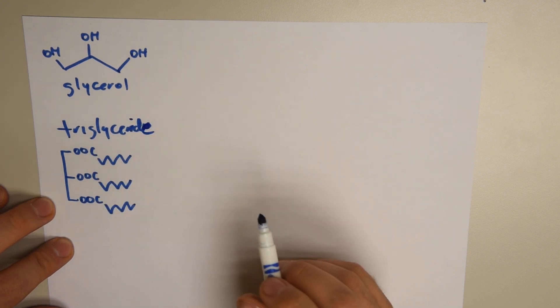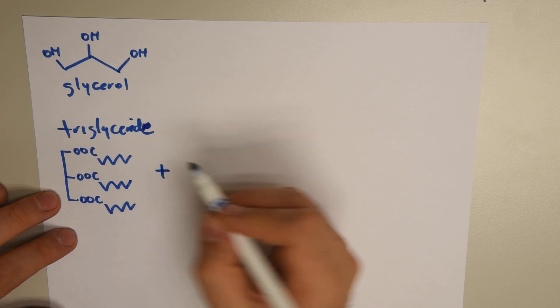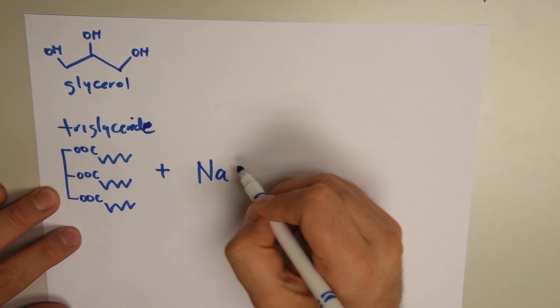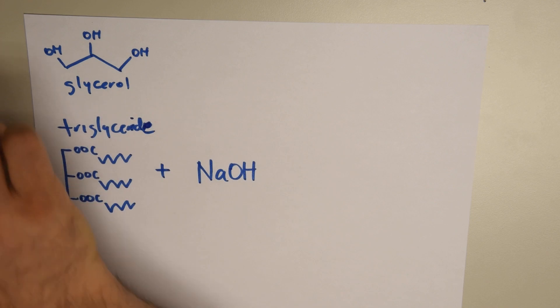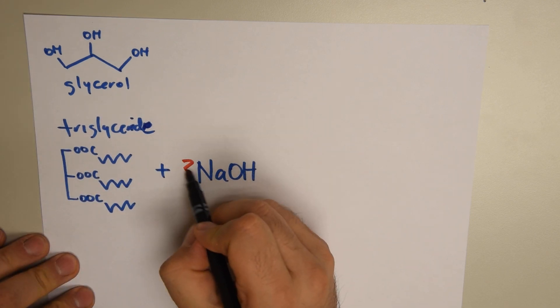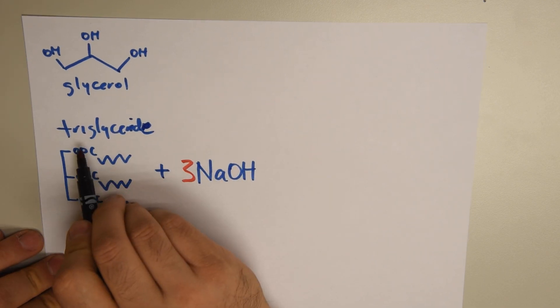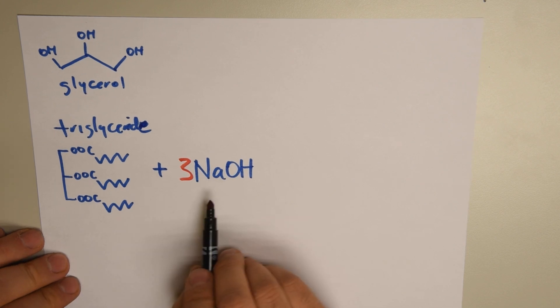And then we're going to choose a base. We're going to choose sodium hydroxide. How many molecules of this sodium hydroxide? Three. Because we're going to break this triglyceride with this strong base.